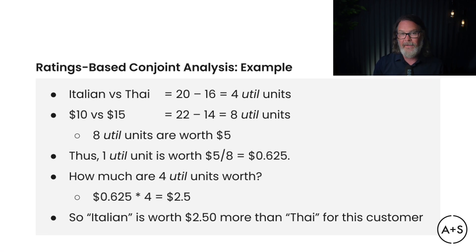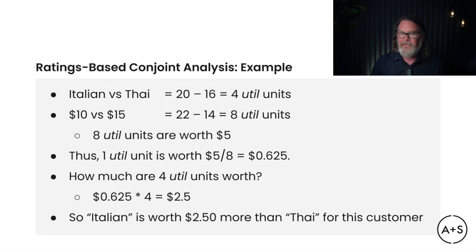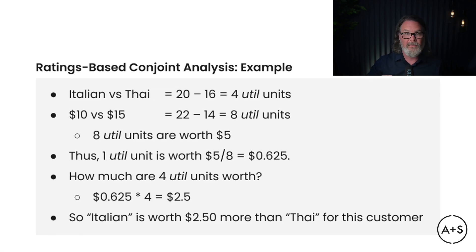This allows us to obtain quantifiable data on how much more the customer values Italian food over Thai food and allows us to set a pricing strategy rooted in real, quantified customer feedback. In this simplified example, we have derived utility values for the various choices presented — and the same kind of process applies to much more sophisticated analysis around smartphone features, a new vehicle launch, or really any product that is a combination of different features.